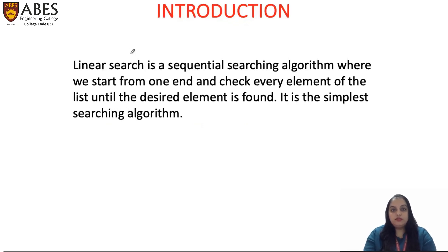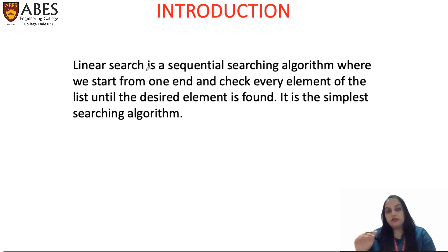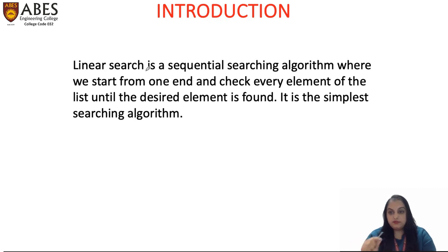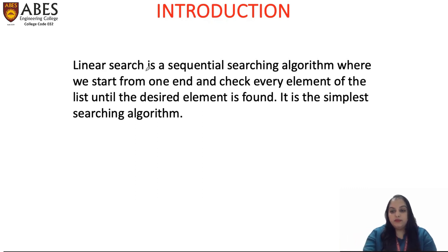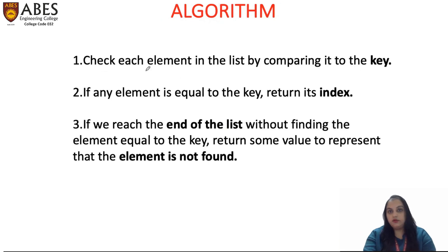So what is linear search? It is a sequential searching algorithm where we start from one end and check every element in the list or in the array until the desired element is found. It is the simplest searching algorithm because one by one we will search linearly in all the array elements if the element that you want to search is present or not.